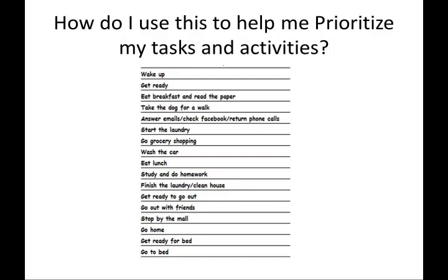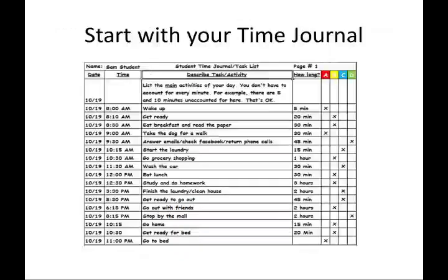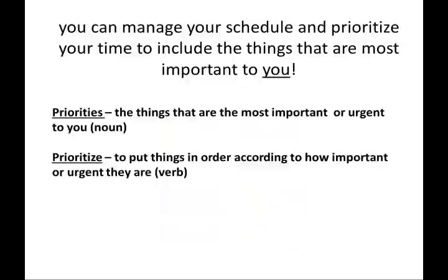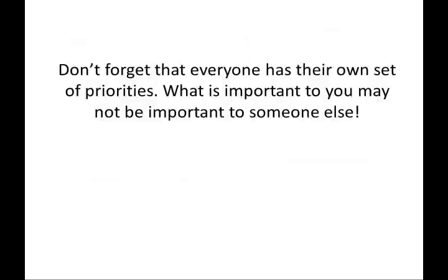How do I use this to help me prioritize my tasks and activities? Start with your time journal. By evaluating your daily tasks and activities according to the matrix, you can manage your schedule and prioritize your time to include the things that are most important to you. Priorities are the things that are most important or urgent to you. Prioritize is to put things in order according to how important or urgent they are. Don't forget that everyone has their own set of priorities.